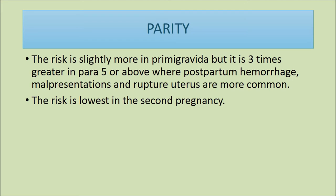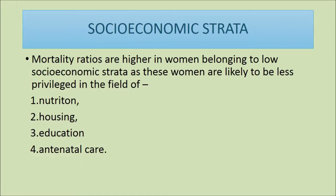The risk is slightly more in primigravida, but it is three times greater in para 5 or above, where postpartum hemorrhage, malpresentations, and rupture uterus are more common. The risk is lowest in the second pregnancy. Parity plays a major role in maternal mortality.